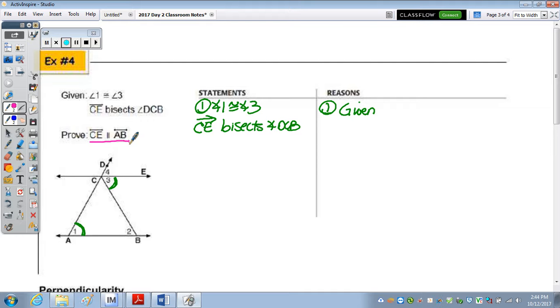Because that's not alternate interior, alternate exterior corresponding, we need to find one of those angle pairs to be congruent, or same side interior to be supplementary. So let's look at the bisector part. If CE bisects DCB, what's true about angle 3 and angle 4? They're congruent. So number 2 is angle 3 is congruent to angle 4, because an angle bisector divides an angle into two congruent angles.